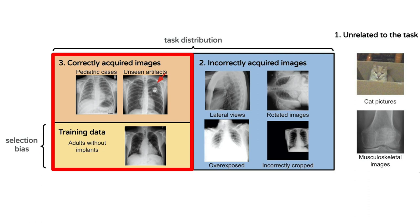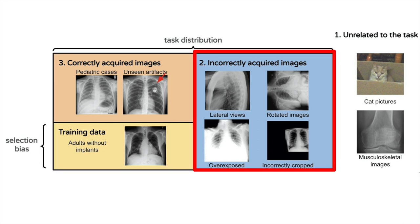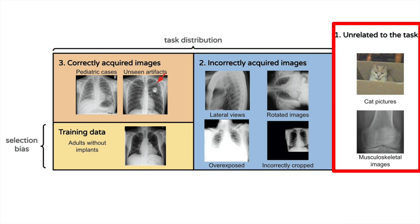The out-of-distribution detection method could be updated to include these images once a validation study was performed. For use case two, we use chest X-rays of different views taken from the PadChest dataset. The in-distribution NIH chest X-ray dataset consists entirely of images taken of standing patients back-to-front, known as the PA or posterior-anterior view. We use chest X-rays taken from the side, front-to-back, or of patients laying flat as our out-of-distribution data. For use case one, we include datasets such as MNIST, CIFAR-10, and ImageNet, which are clearly from a different domain. We also include skeletal X-rays from the MURA dataset, which are X-rays from other parts of the body.